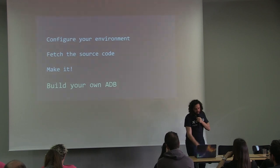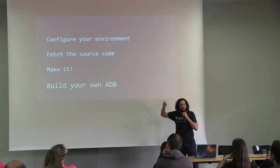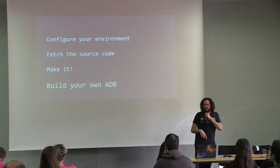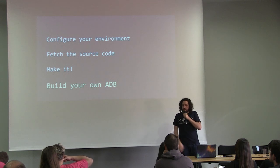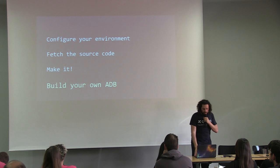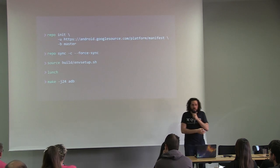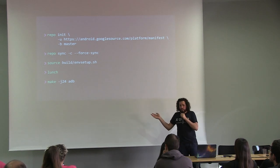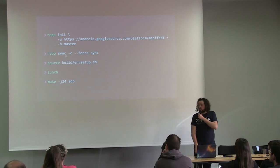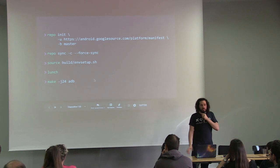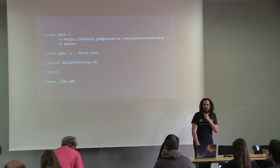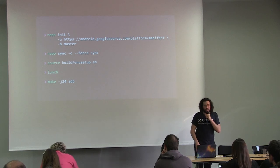Let's see how we can develop ADB. Configure your environment, fetch the source code, and make it — that's pretty straightforward. If you want to configure your environment, there's a link on the speaker notes — install everything advised there. If you've already built the Android OS, it's exactly the same tooling. Use the `repo` tool (the standard tool for the Android Open Source Project), target master, fetch with `repo sync`, configure your environment, and run `make adb`. It can take between 15 minutes and one hour depending on your configuration.